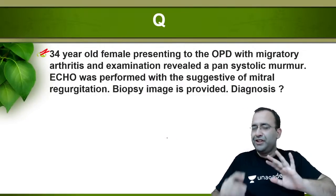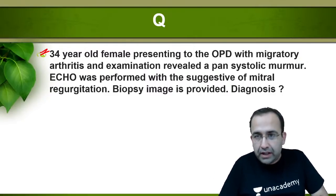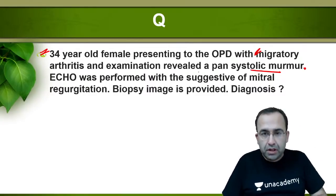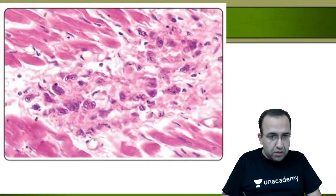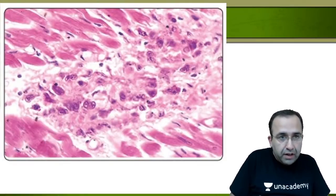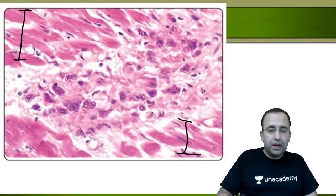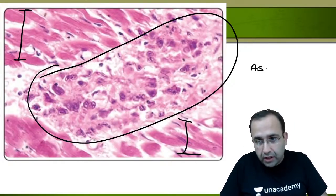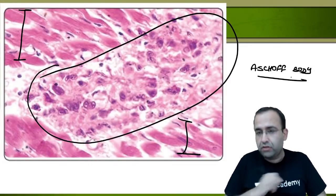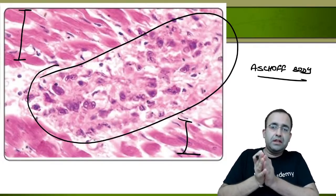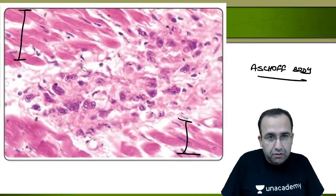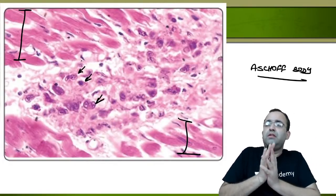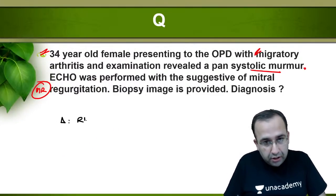Next question: a 34-year-old young female presented to the OPD with migratory polyarthritis and a pansystolic murmur. Echo shows mitral regurgitation. Biopsy image was provided showing normal cardiac muscle with focal distinctive inflammation — called Aschoff body. The diagnostic cell of an Aschoff body is the Anitschkow cell, also called caterpillar cells. If an arrow is put on any cell in an Aschoff body image, mark it as Anitschkow or caterpillar cells.